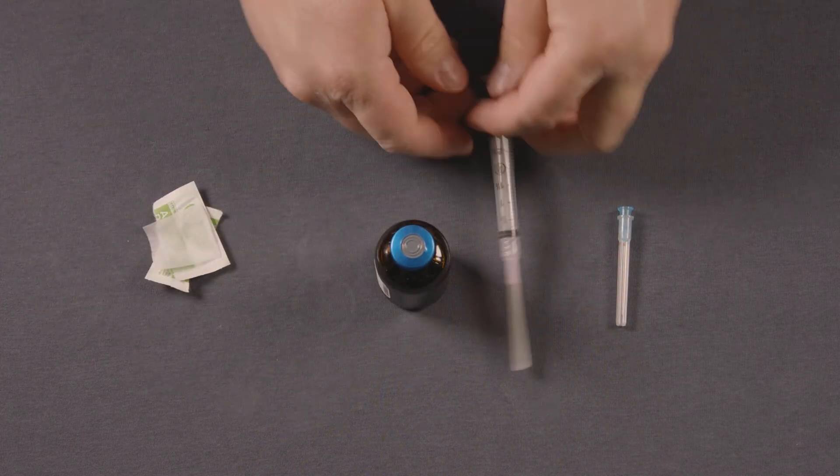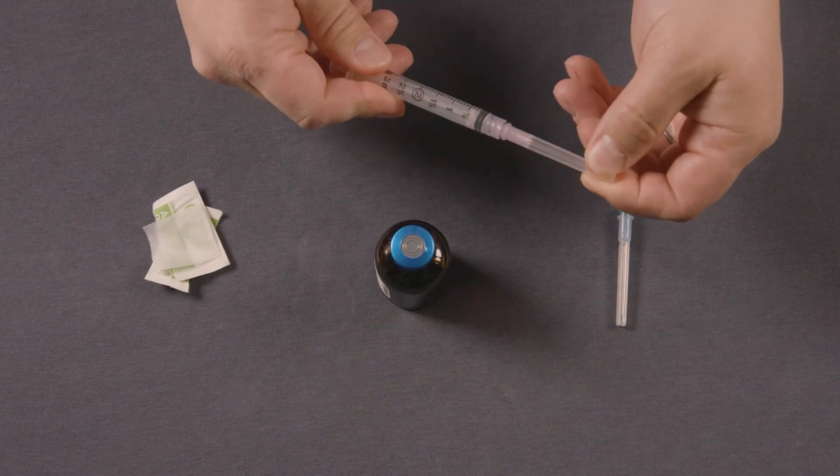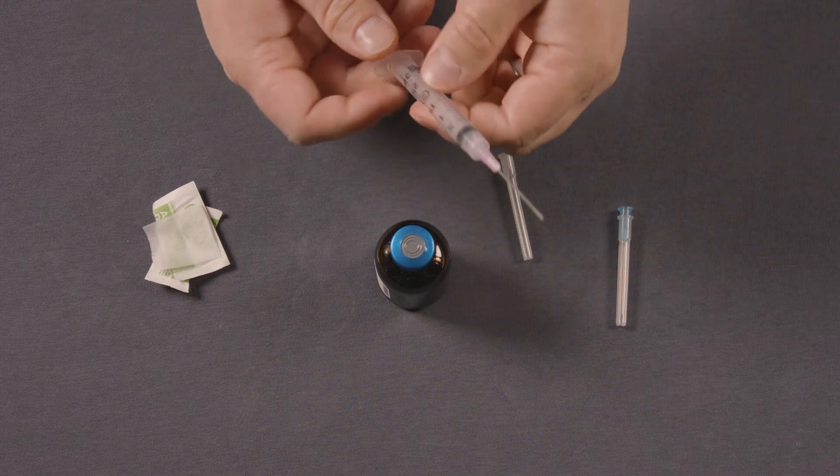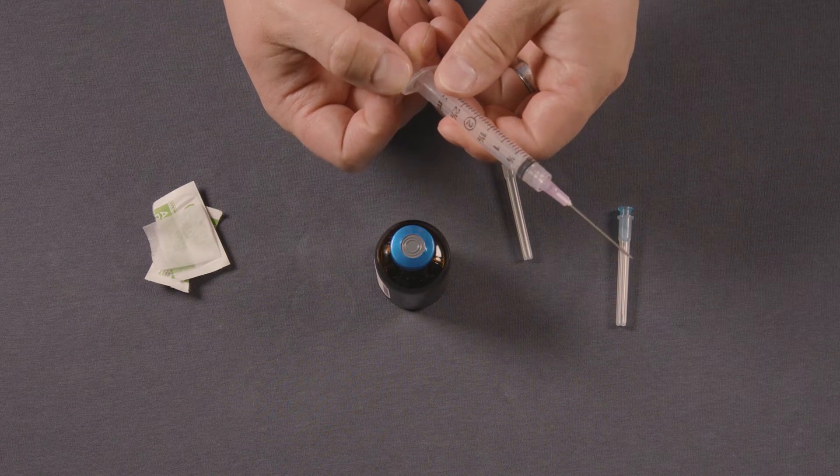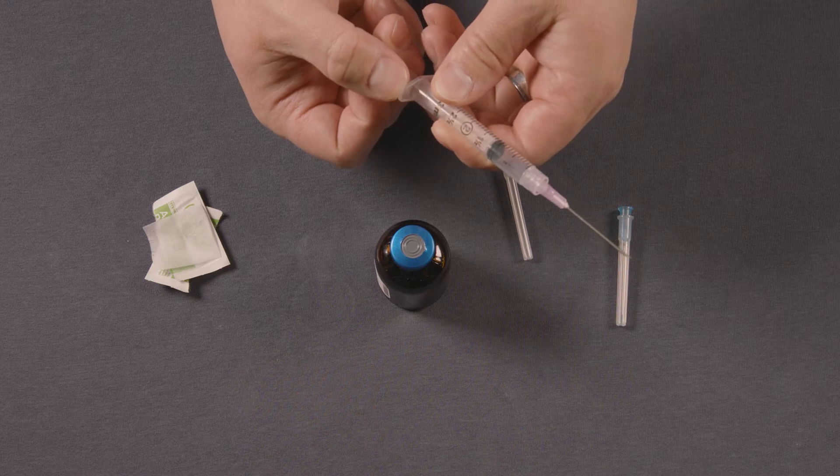Next we're going to remove the cap from the drawing syringe and needle. We're going to pull back the syringe to the volume that you're going to need. So if you're going to need 1 ml you're going to draw it back to 1 ml with air.